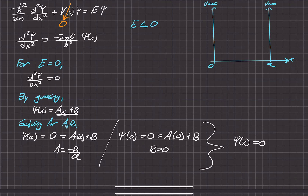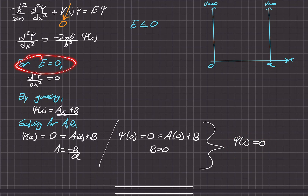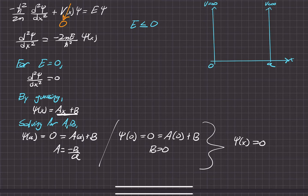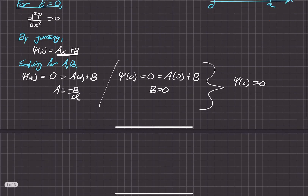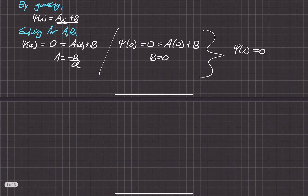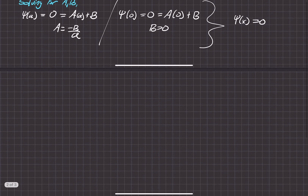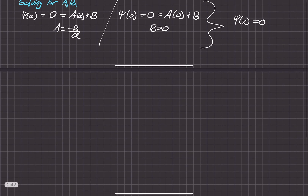The wave function cannot exist for conditions where the energy is equal to 0. So we're halfway through the problem. Next, we do the case for energies that are less than 0.